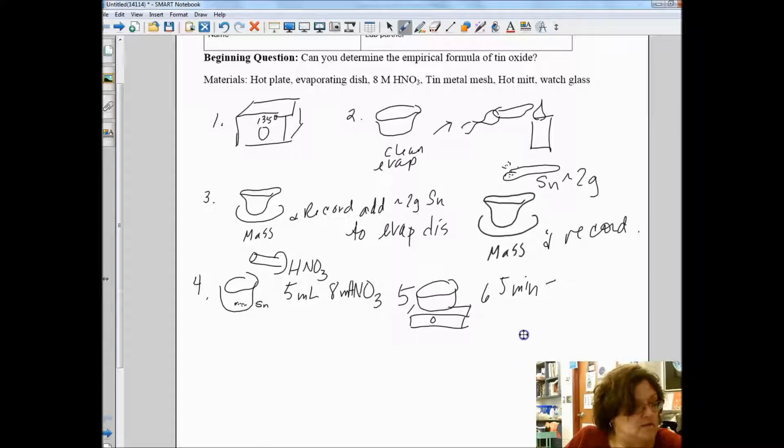You want to heat it slowly. If it's got a lot of popping going on, it's going too fast. After five minutes you can continue to heat until the contents are dry. Then you're going to turn it up to 270 and heat for five more minutes, and then to 405 and heat for five more minutes.